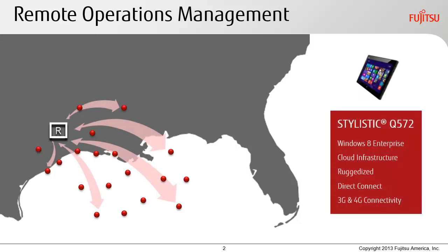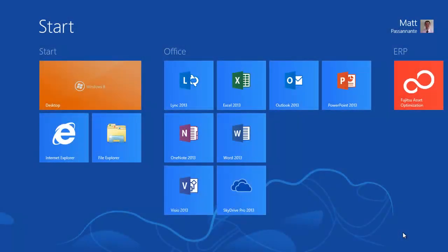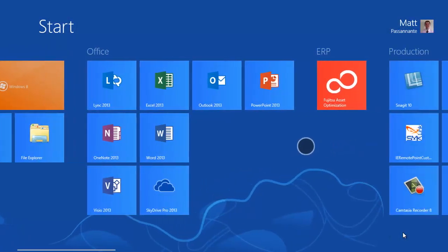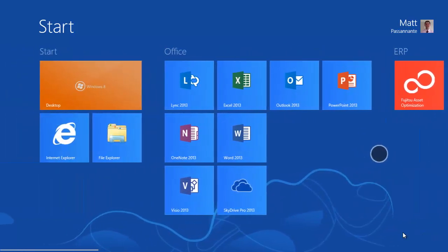Each manager has a Fujitsu Q572 tablet that they can use to connect to their corporate office via cloud infrastructure, direct connect, and 3G-4G connectivity. Here we have a tablet running Windows 8 Enterprise, and as you can see, we have an asset optimization application available to us from the start screen.